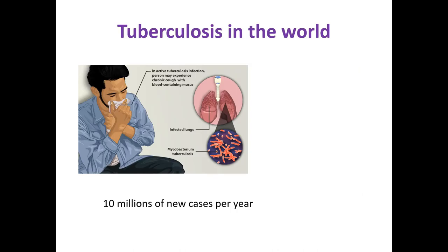Firstly, let's remember about the epidemiology of tuberculosis in the world. About 10 million new cases of tuberculosis are registered every year. These are cases of active disease with fever, cough, weight loss, or X-ray changes. However, that is not a full story, because most infected people have latent tuberculosis.